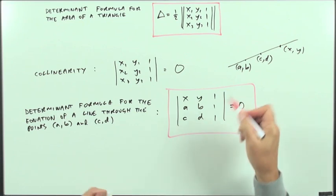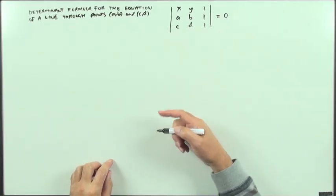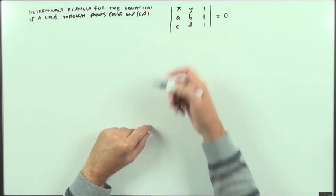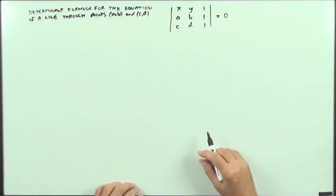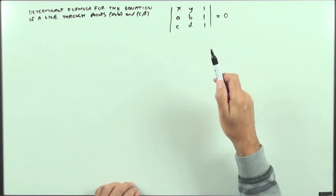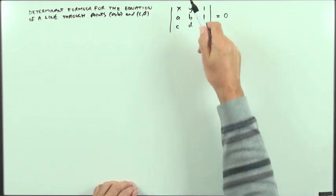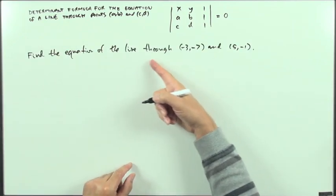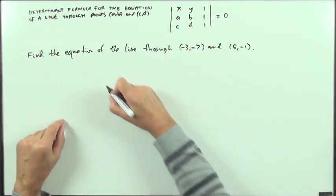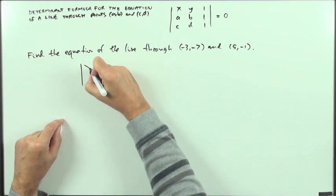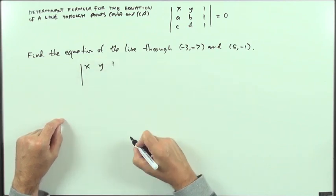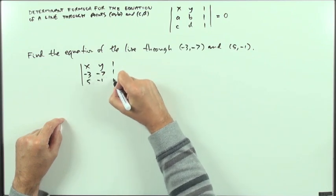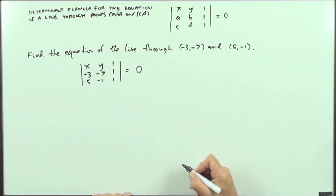The determinant formula for the equation of a line through two given points (a, b) and (c, d) comes directly from the degenerate triangle area formula set equal to zero. As an example, find the equation of the line through two given points. Setting it out, the general point (x, y) that lies on the line through (negative 3, negative 7) and (5, negative 1) satisfies that determinant equal to zero.